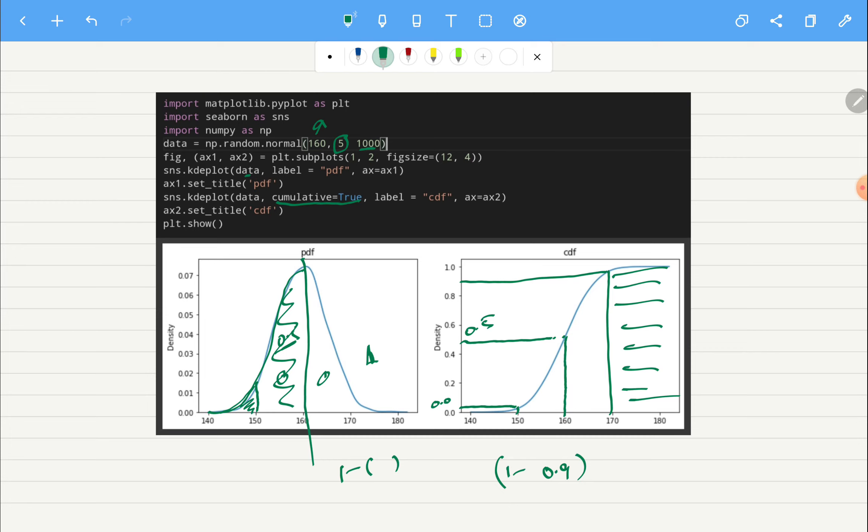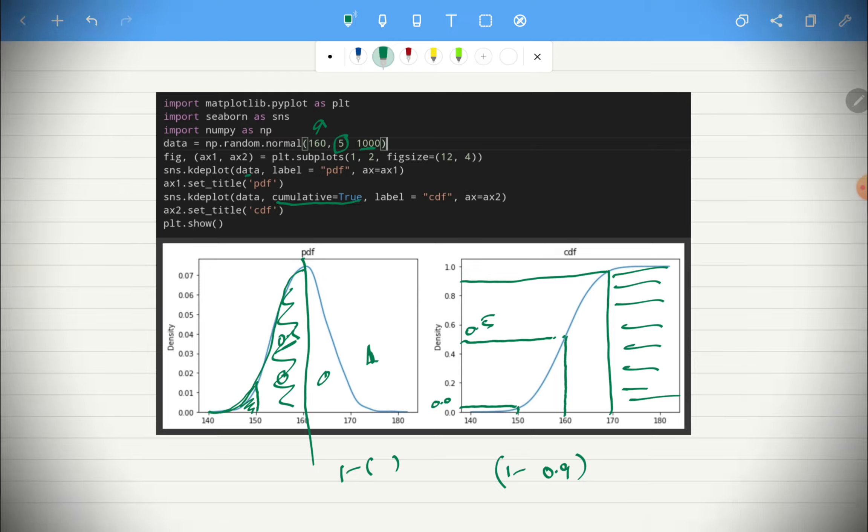So this is how you can interpret PDF and CDF and I hope it made more sense and it was intuitive to understand. And if you want to play around you can have different distributions, you can have different mean, you can have different standard deviation, you can generate a lot of different number of points and play around to understand more. And you can use this particular code in a bit. So yeah this is it for this video. We will discuss about normal distribution in next video. So hope to see you in the next one, happy learning.